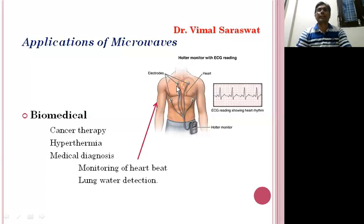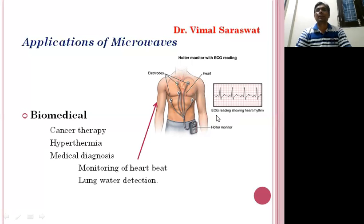Here we are showing the monitoring of the heartbeat of a person. These are electrodes which are inserted in the body of a person, near the heart. This is the monitor which records the heartbeat, and these heartbeats are displayed on screen. The ECG reading shows the heart rhythm of a person.